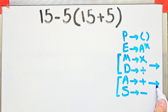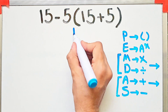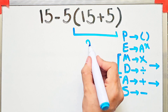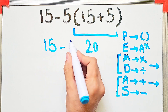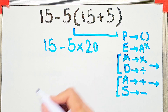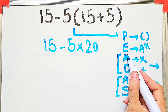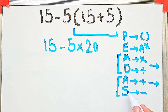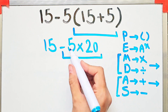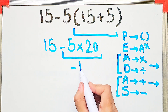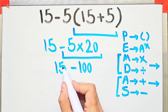When we have both at the same level in an expression, we start from the left. First, we simplify the parentheses: 15 plus 5 equals 20. Now we have 15 minus 5 times 20. In this step, we do the multiplication because multiplication has higher priority than subtraction: negative 5 times 20 equals negative 100.